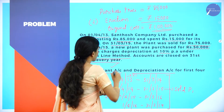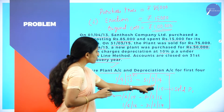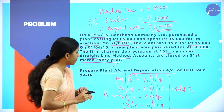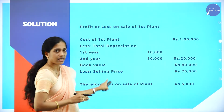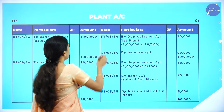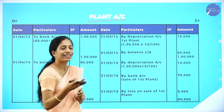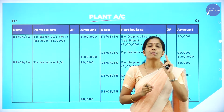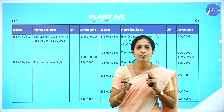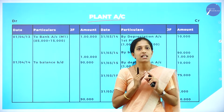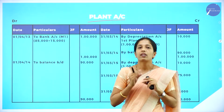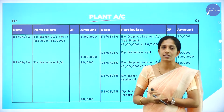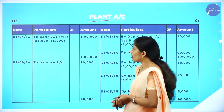First, prepare the plant account. When the plant is sold in the second year, we will check whether it was sold at a profit or a loss. You already know the journal entries: first, for purchasing an asset — asset account debit to bank account; second, for charging depreciation — depreciation account debit to asset account; third, for transfer of depreciation to profit and loss — profit and loss account debit to depreciation account.